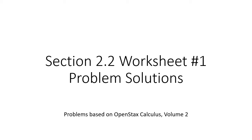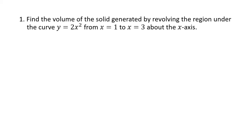This is the first of two videos working through sample problems on volumes by slicing. In each of these problems we're going to have a region described and then we're going to be revolving that region about an axis. In this case we're talking about the area under the curve y equals 2x squared from x equals 1 to x equals 3, and we're revolving that about the x-axis.